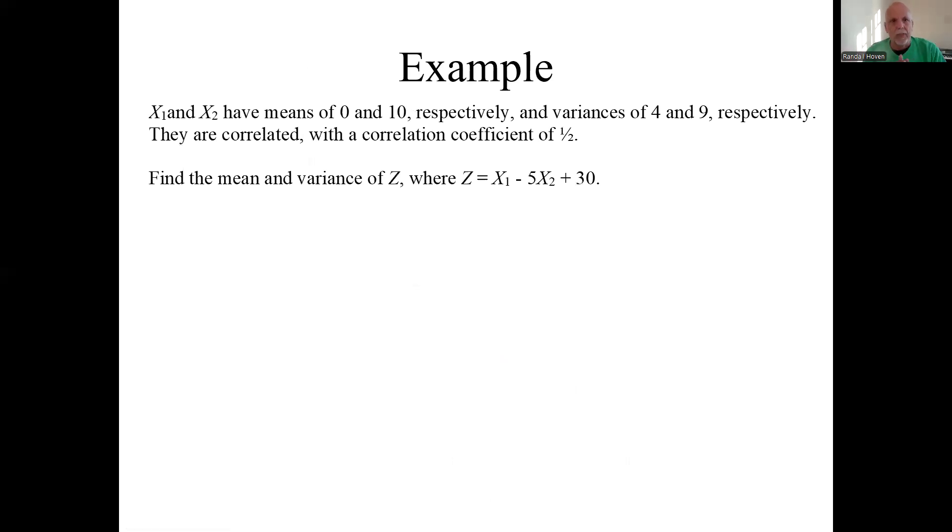Here's an example of that. Let's say I have random variable X1 with the mean of 0, random variable X2 with the mean of 10. We have variances of 4 and 9 respectively and a correlation coefficient of ½.